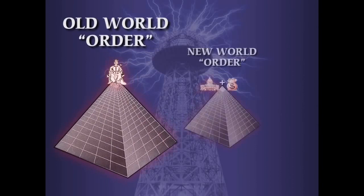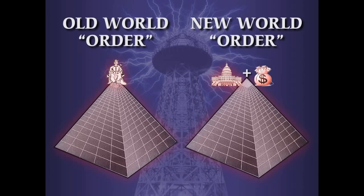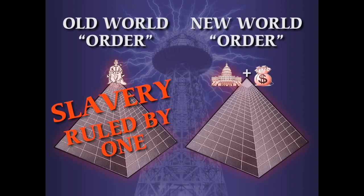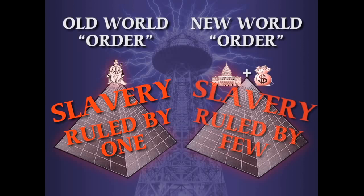Let's compare the old world order — with the king at the top — with the new world order. If we're being honest and stop euphemizing: the old world order is slavery ruled by one. The new world order is slavery ruled by few, determined and dictated by the god called money. Most people lie to themselves every day from the minute they get up, but if we're being honest with ourselves, that's what these two systems most certainly are.